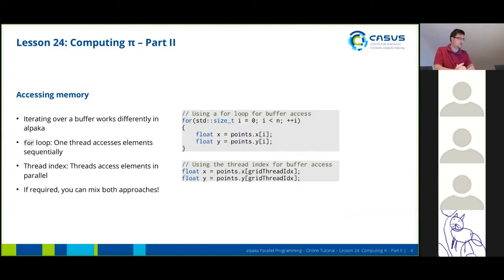In the next step we're going to access the memory buffer. There is a difference between how you write a kernel in APAKA and how you would write a traditional memory access. Iterating over a buffer works a bit differently. Traditionally you just use a for loop to go over the number of points and get your indices.